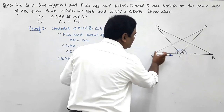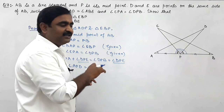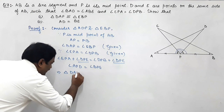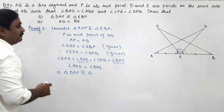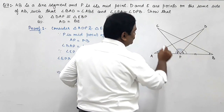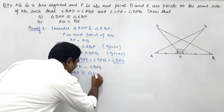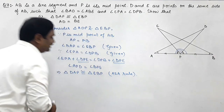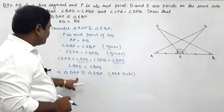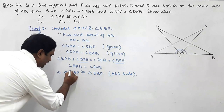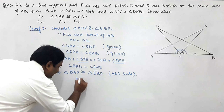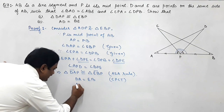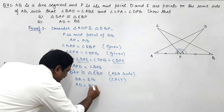We now have two angles and the included side equal in both triangles. Therefore triangle DAP is congruent to triangle EBP by the Angle-Side-Angle (ASA) congruence rule. By CPCT, DA equals EB, which can be written as AD equals BE. This completes the proof.